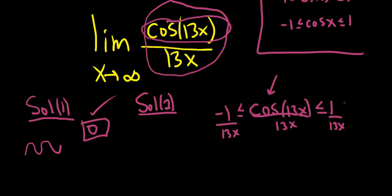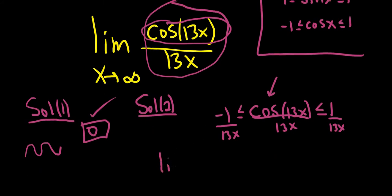And then the squeeze theorem says that we just take the limit of each piece on the ends. So the limit as x approaches infinity of negative 1 over 13x. Well, this limit is 0 because the bottom gets really big. And the limit over here of the other piece is also 0 because the bottom gets really big.